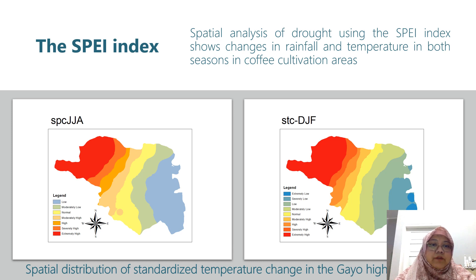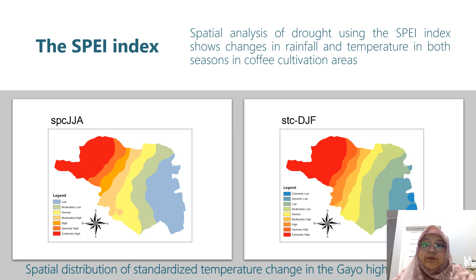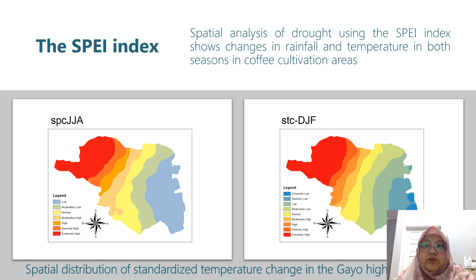This is the map of the SPEI index. Spatial analysis of drought using the SPEI index shows change in rainfall and temperature in both seasons in coffee cultivation areas. The figure shows the spatial distribution of temperatures in the DJF period — December, January, and February — and the JJA period — June, July, August — in coffee-producing areas Gayo Highlands, Central Aceh, and Bener Meriah. The DJF period has higher temperatures than the JJA period, with 77% of the area having temperatures in the moderately high to very high category, while during the JJA period only 37% of the area had temperatures in the moderately high to very high category.